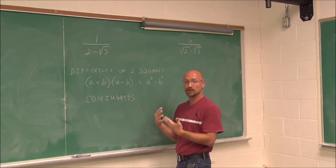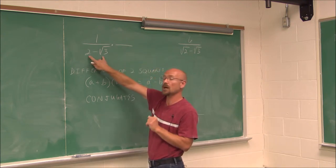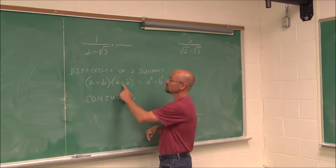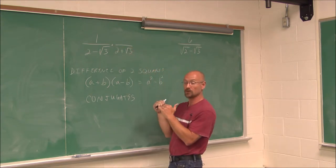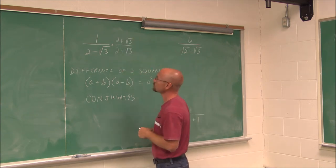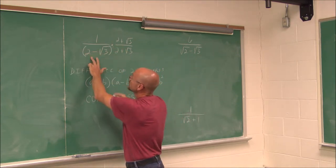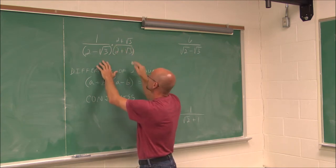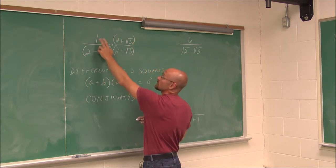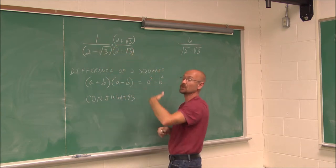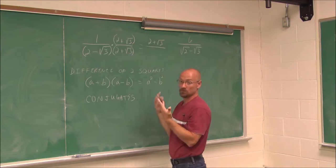So looking at 1 over (2 − √3), its conjugate is (2 + √3) — we just change the sign in between to find the conjugate. Just like any fraction, what I do to the denominator I want to do to the numerator as well. We can treat the denominator as a binomial and FOIL it. On the top, I just have to distribute, because this is a monomial — it's just a single 1, which makes that multiplication pretty easy. 1 times (2 + √3) is (2 + √3).